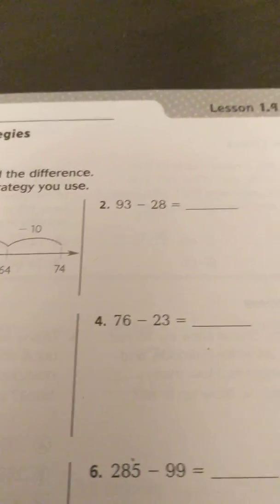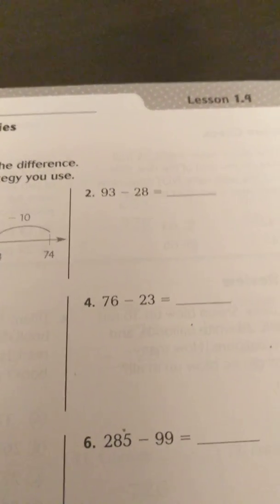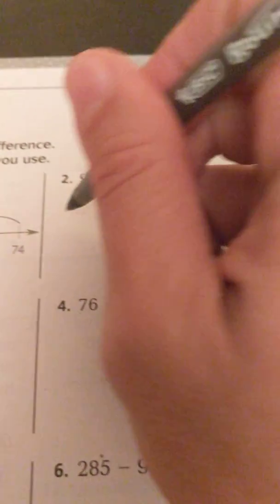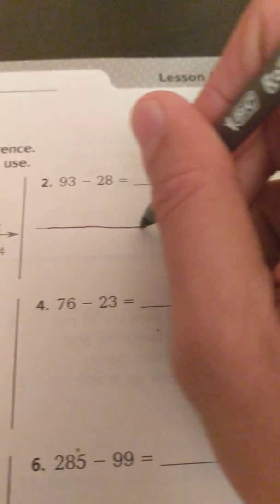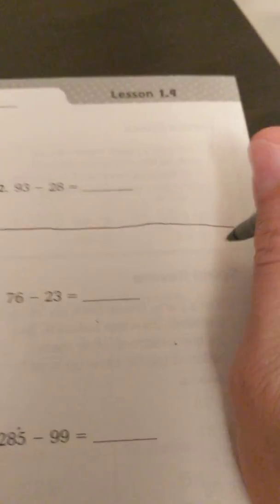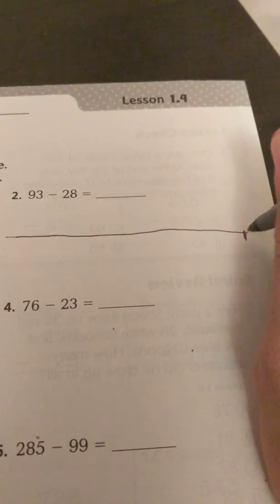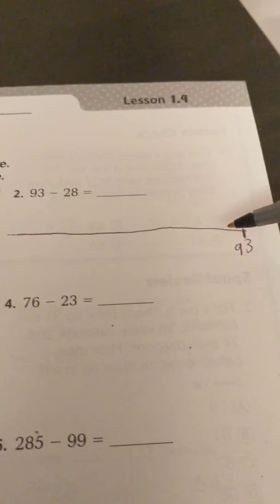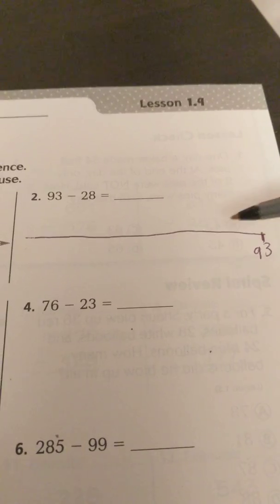So I'm going to do an example over here. I'm going to do it slightly different by just chunking the tens. I think it's a little bit easier. So let me draw this line across here first. Thank God my pen worked. And I'm going to write 93 over here. So I'm going to subtract 28 from this number.